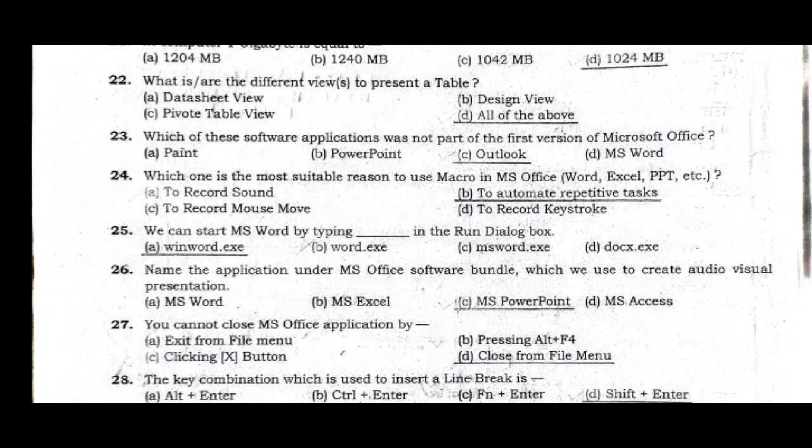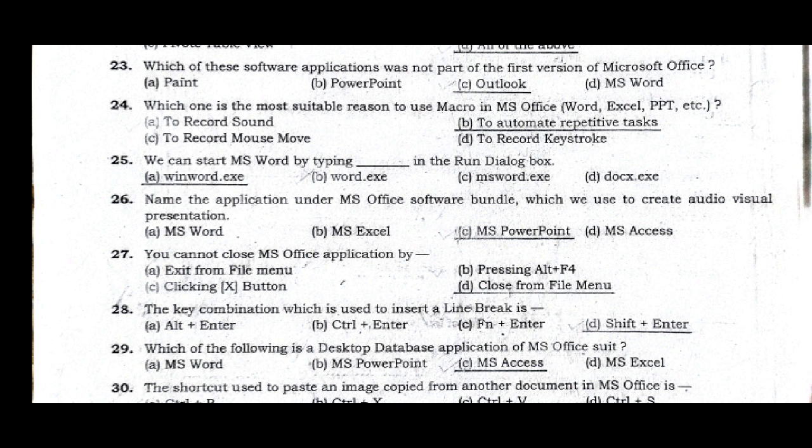Question 25: We can start MS Word by typing in the run dialog box — correct answer option A, WINWORD.EXE. Question 26: Name the application under MS Office software bundle which we use to create audio-visual presentations — answer: MS PowerPoint. Option C is the correct answer.